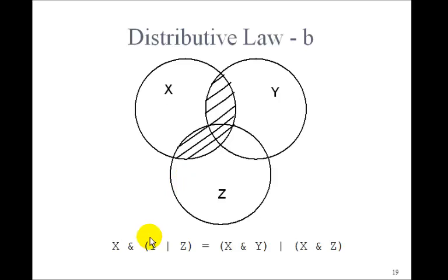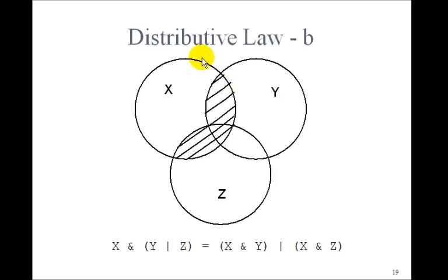Here's the other distributive law: x AND (y OR z) equals (x AND y) OR (x AND z). y OR z is all of both circles together. AND that with x gives the overlap area — just this hatched area. The right-hand side has x AND y as one football, x AND z as another football. Together they match the left-hand side.